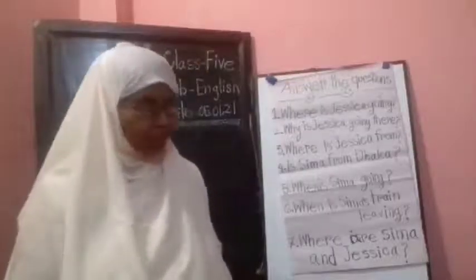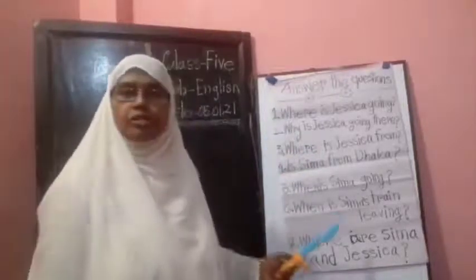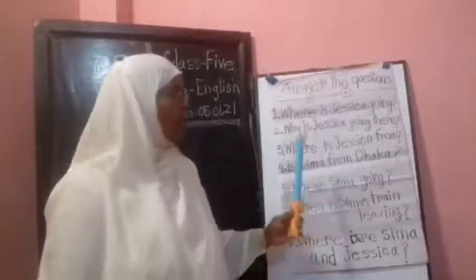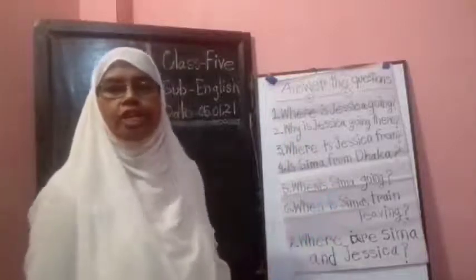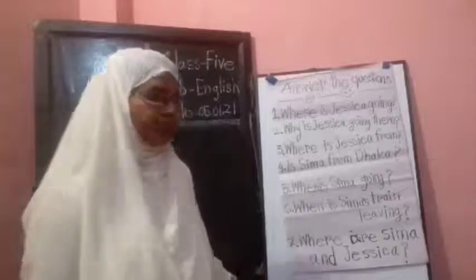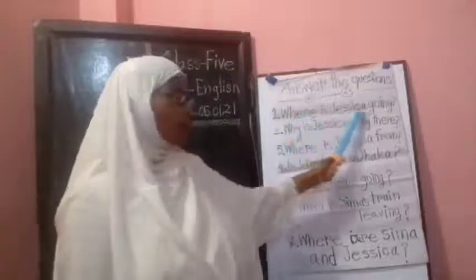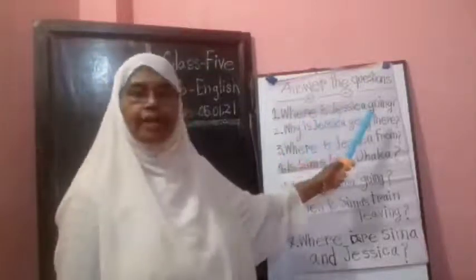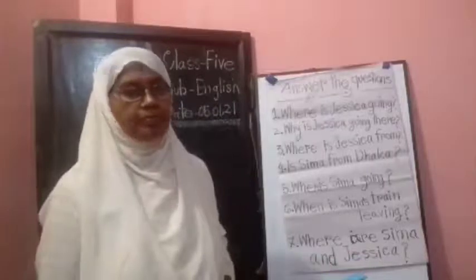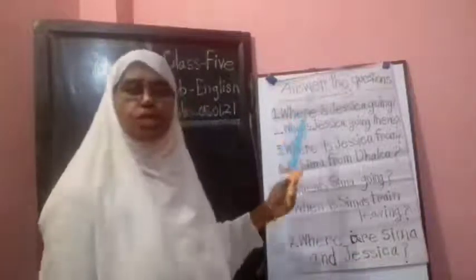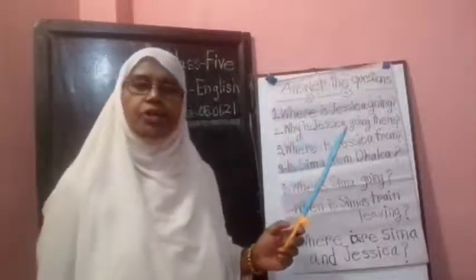Dear students, look at the board. There are seven questions here. You will try to answer these questions from your English book at page 2. The first question is: where is Jessica going? Jessica is going to Chattagram. Students, write this answer in your notebook.